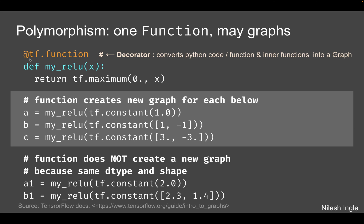Here we have an example: we create a function myrelu in Python, decorated with @tf.function, which converts it into a graph. We then input different types of values. When we input tf.constant(1.0), a rank-zero float tensor, that creates one graph. For input b — tf.constant([1, -1]) — data type is integer, rank-one tensor, so that creates another graph. For input c, a rank-one float tensor with value 3.0, that creates a third graph.